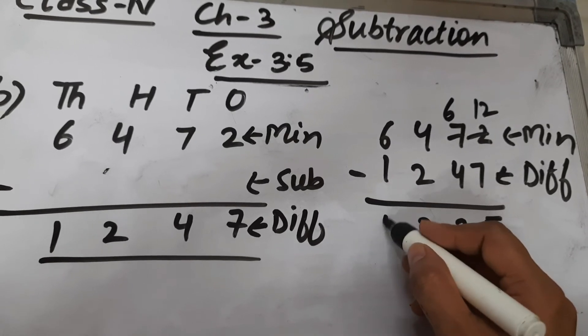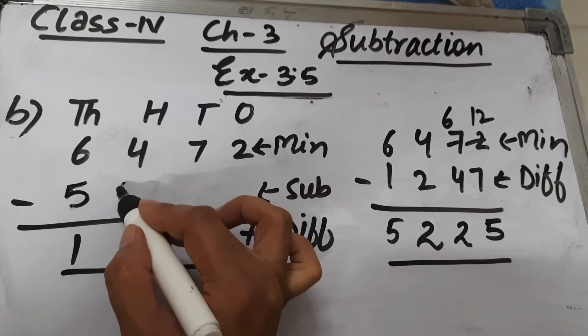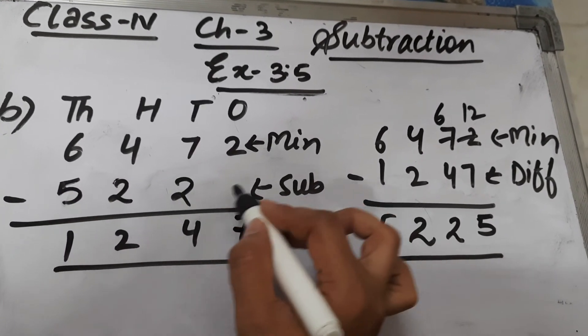So this is our subtrahend. The subtrahend is 5,225.